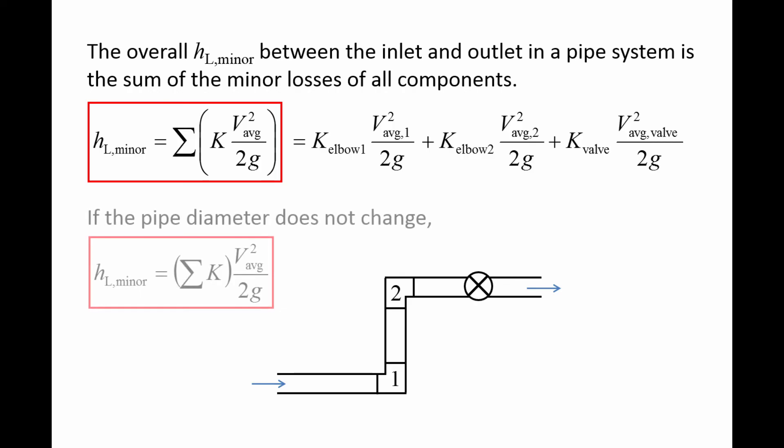For many pipe systems, the pipe diameter does not change along the entire system. In these cases, the average velocity will be the same for all components, and the V squared over 2g term can be pulled out of the summation.